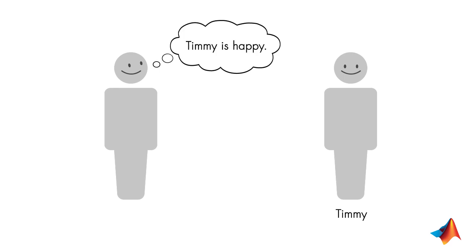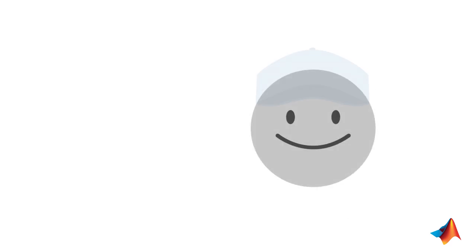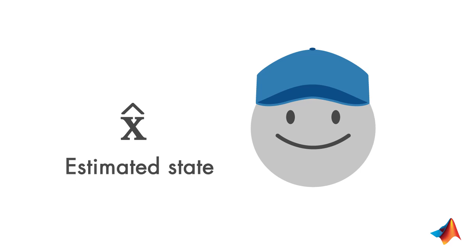State observation helps you estimate something that you can't see or measure directly. Throughout the rest of the discussion, if you see something with a hat on it, this means that it is estimated through a state observer. So if the state x is shown with a hat, then it is an estimated state.